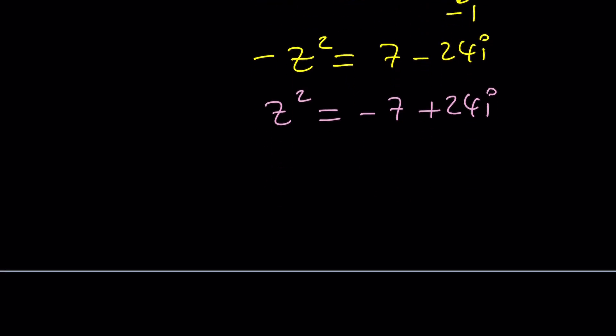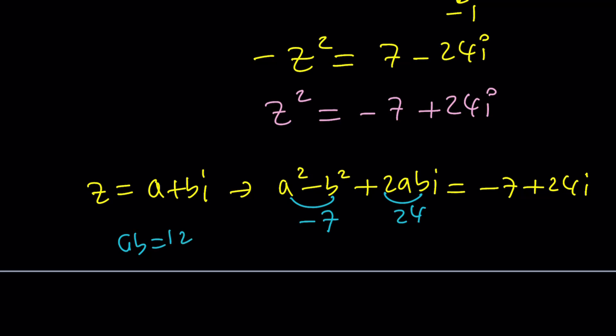What am I going to do with this? You could replace z with a plus bi and then go through the process. What happens if you square z? You're going to get a squared minus b squared plus 2abi. Set it equal to negative 7 plus 24i. This is going to be negative 7. This is going to be 24, which means ab is 12. Find two numbers whose product is 12, and among those pairs, find the one whose difference of squares is equal to negative 7. So many ways to go. I'm not going to get into those, but you can definitely take it from here and find a and b.